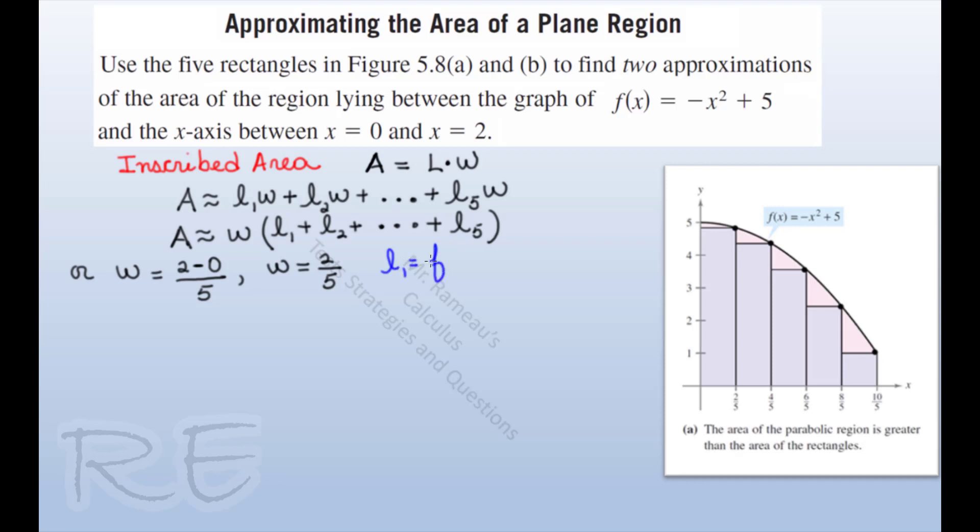And L₁ will be represented by f of two-fifths. We are taking the right endpoint. L₂ will be f of four-fifths since it's the height of the rectangle.